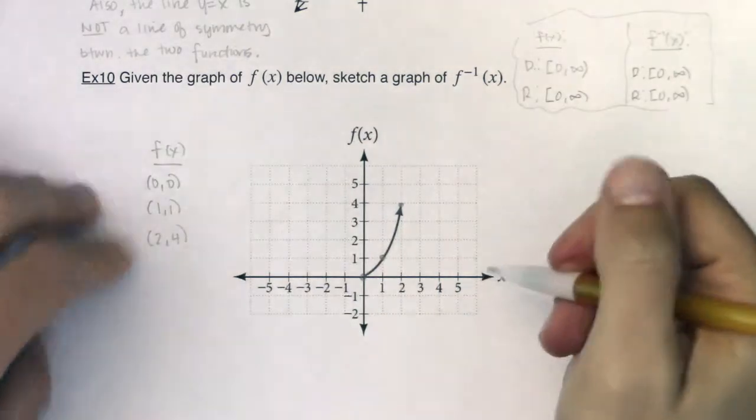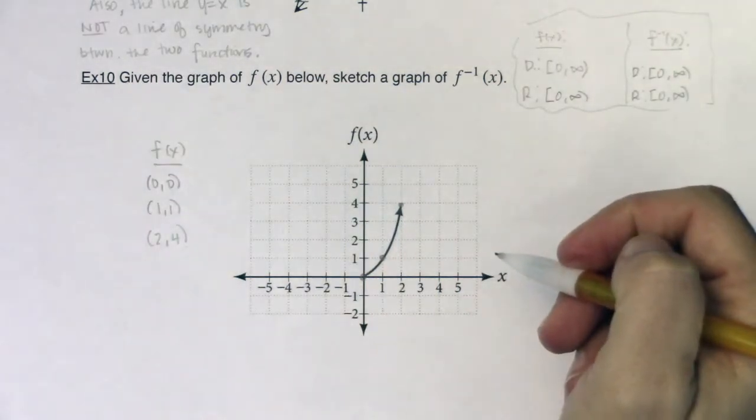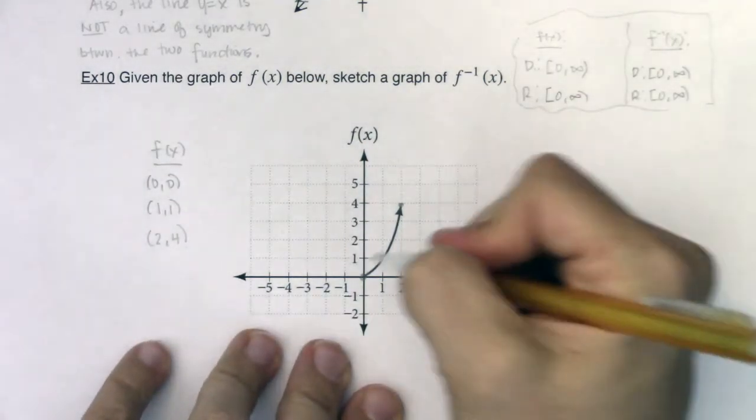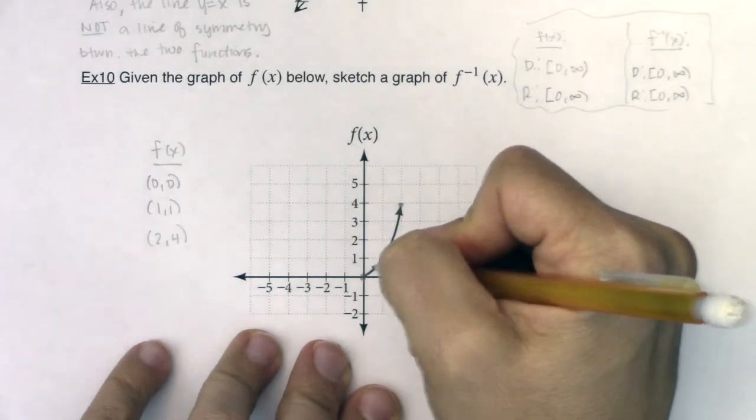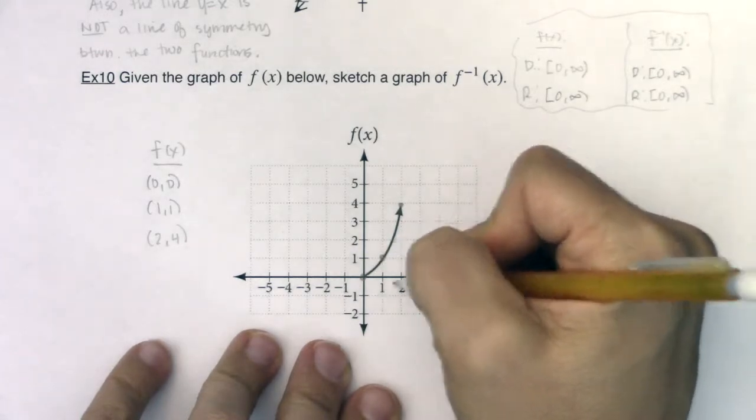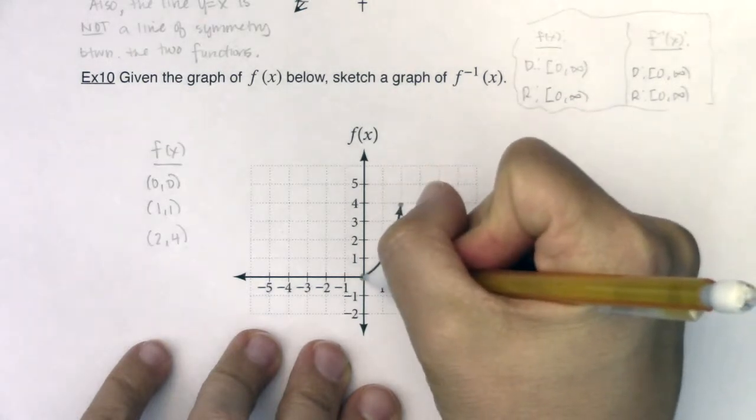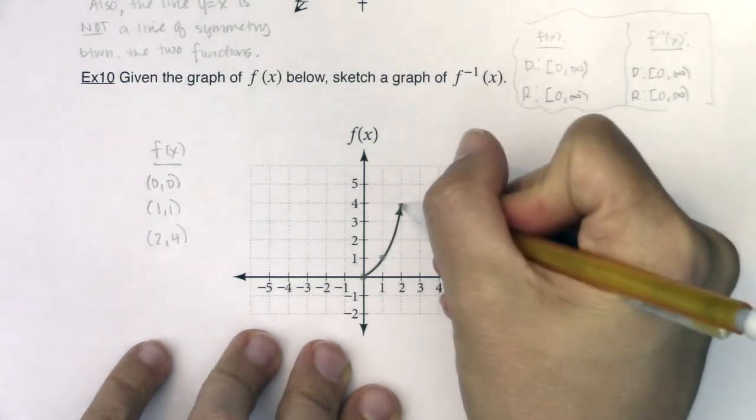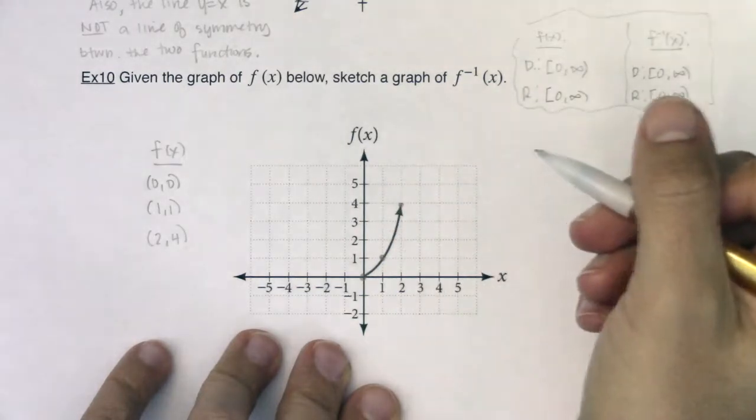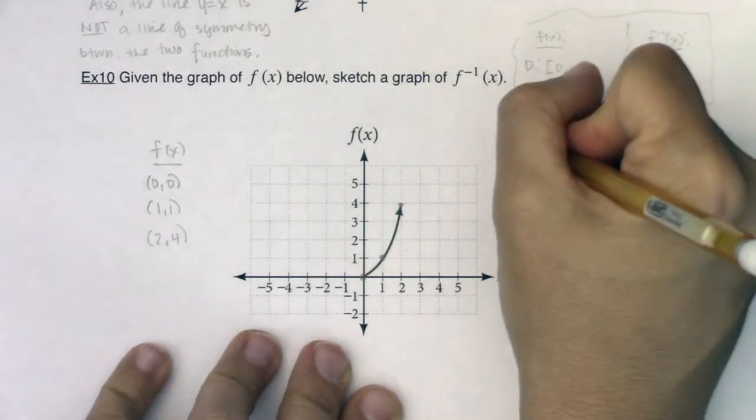If this isn't enough to figure out what f inverse looks like, I can try different ordered pairs—like one half or one and a half. When I'm working with these functions, I try to find ordered pairs that fall on the grid marks because they're easier numbers to deal with.